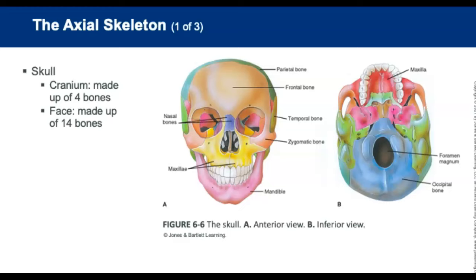The cranium protects the brain and consists of four bones. The occipit is the flat posterior portion. The temporal bones are the lateral portions. The parietal bones are located between the temporal and the occipit. And the frontal bone is the forehead.